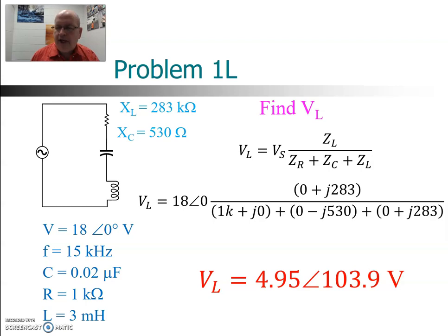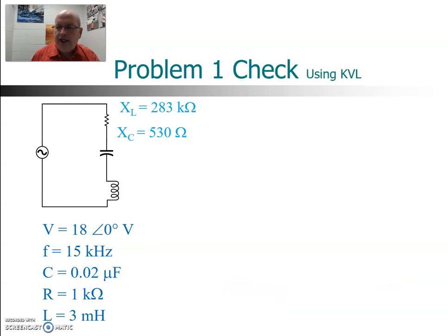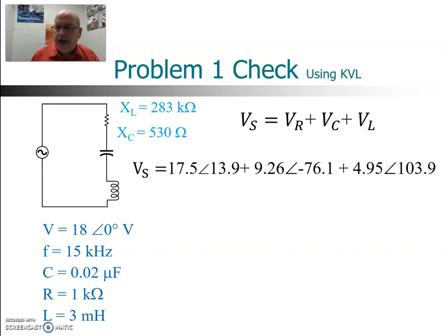Now what we can do is we can take all those voltages and add them up. And you remember using Kirchhoff's voltage law, all the voltages should add up to zero. I just took the source voltage and put it on the other side of the equation and said the source is equal to the drops across the three impedances. And if I do that, I've got to use complex form of the voltage. So I've got to include the angles.